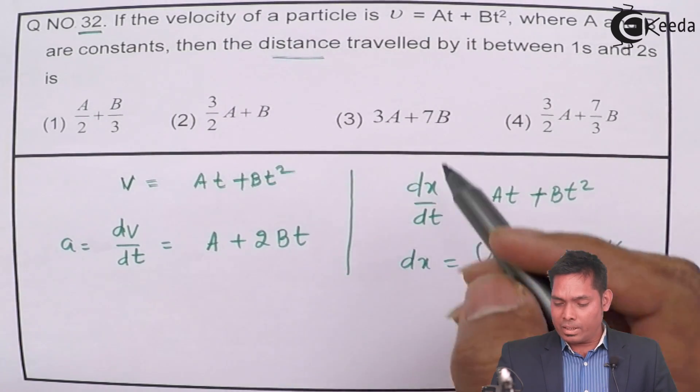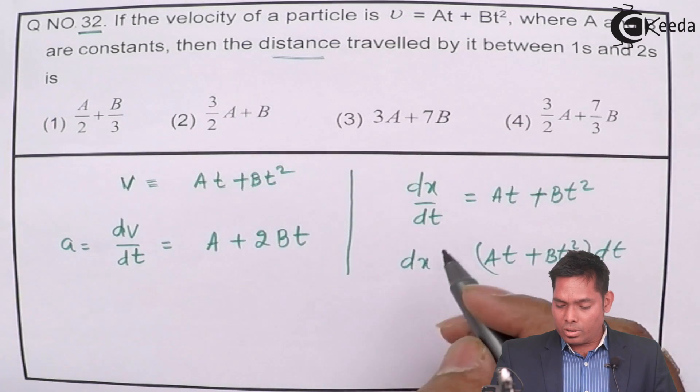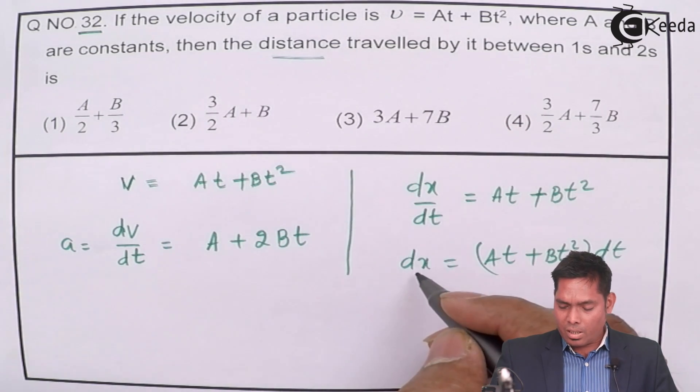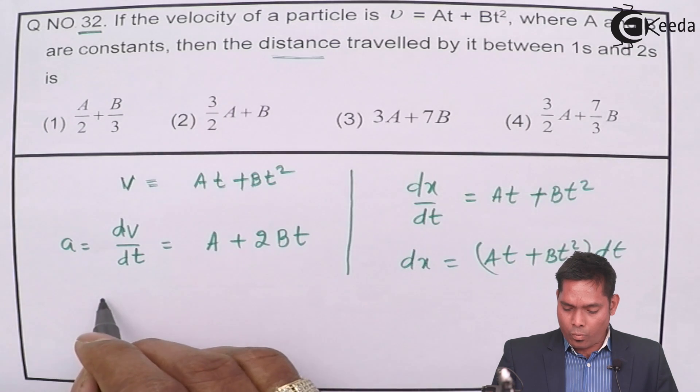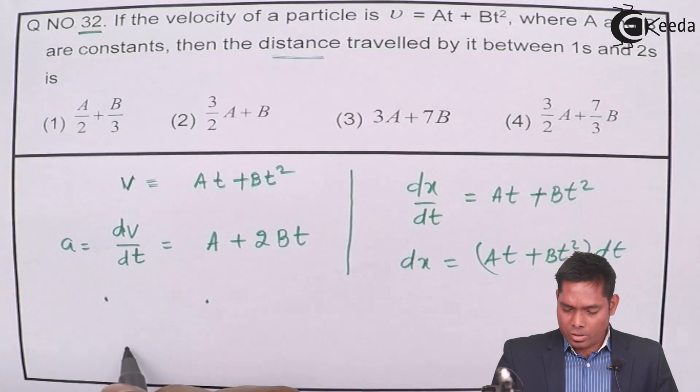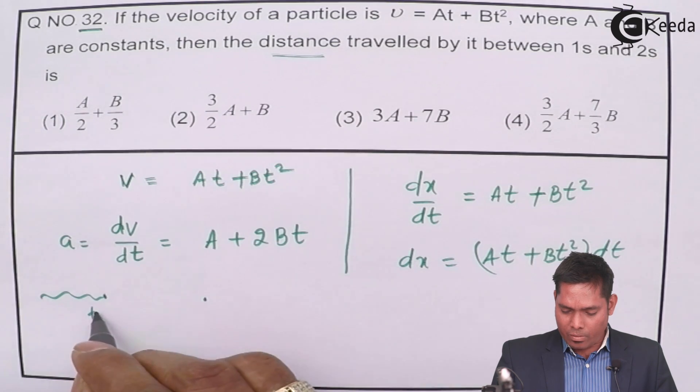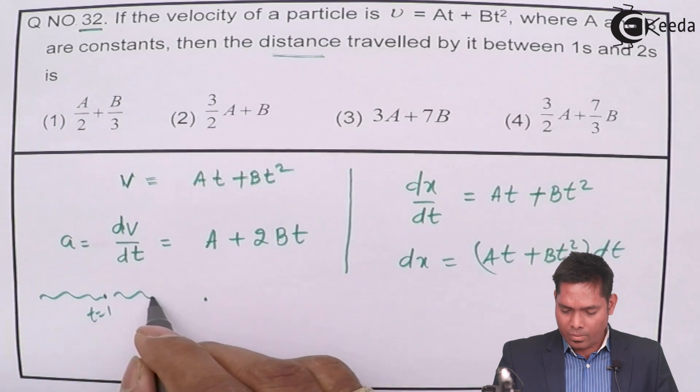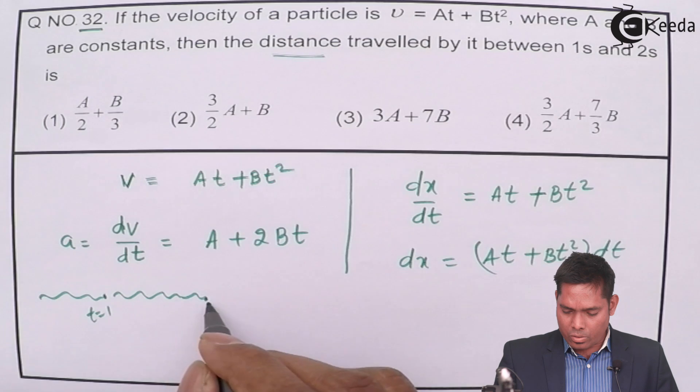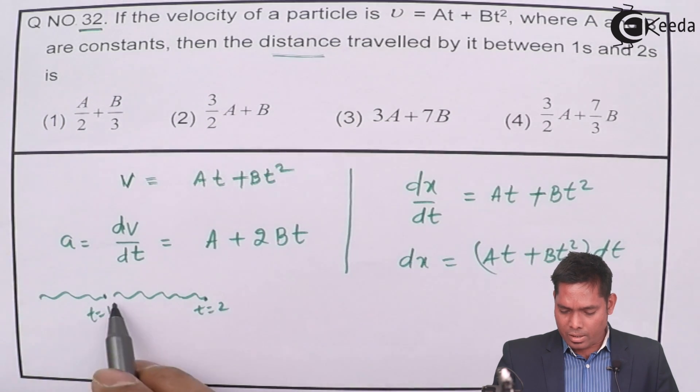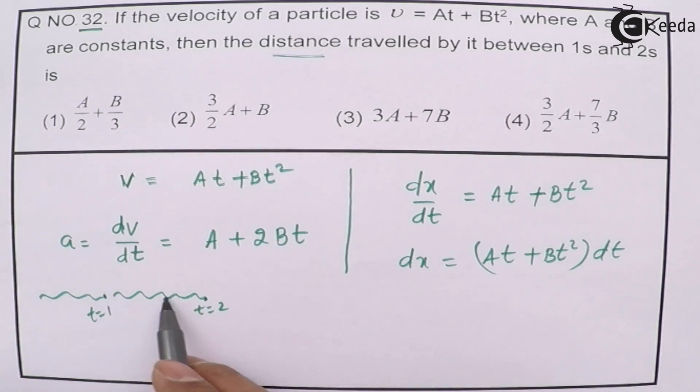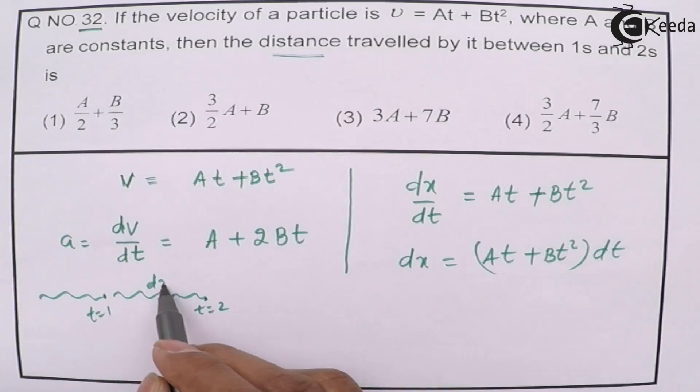Because we are interested in the distance traveled, this is the change in distance. From one point to another point, suppose the time from wherever it is coming, here it will take 1 second, and from here to here, it takes t equals to 2 seconds, then this distance, the distance traveled during this time, 1 to 2, is dx.